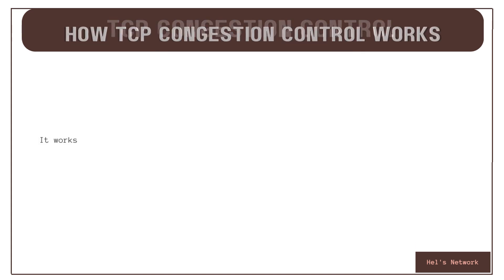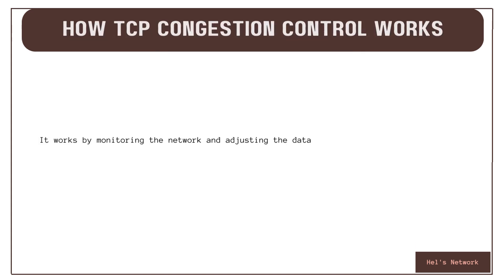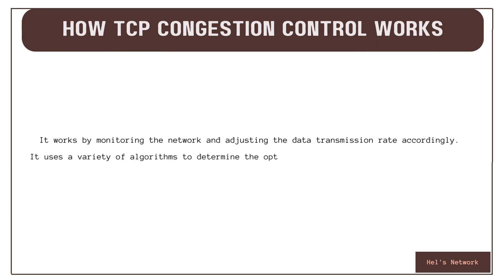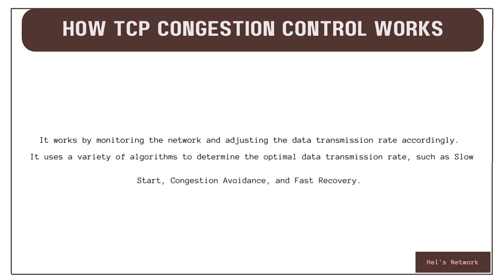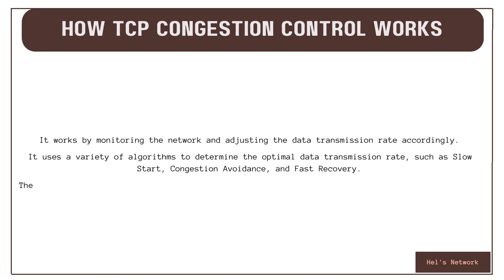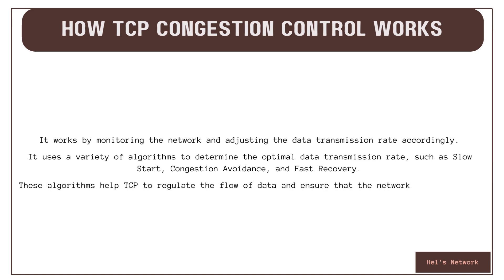It works by monitoring the network and adjusting the data transmission rate accordingly. It uses a variety of algorithms to determine the optimal data transmission rate, such as slow start, congestion avoidance, and fast recovery. These algorithms help TCP to regulate the flow of data and ensure that the network remains stable.